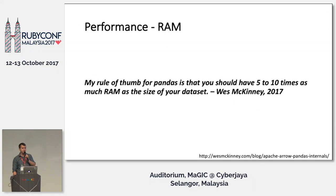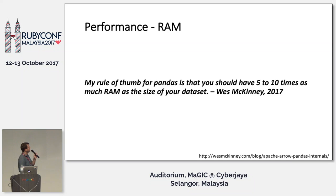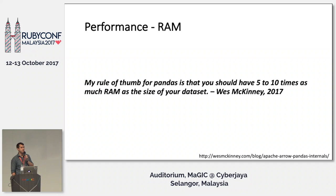The biggest blocker for all of them — this is a quote from Wes McKinney's blog, the guy who created Pandas — his rule of thumb is that you should have roughly five to ten times as much RAM as the size of your data set, which is obviously pretty huge. That's definitely been true of our experience in production: RAM has absolutely been the biggest performance blocker.